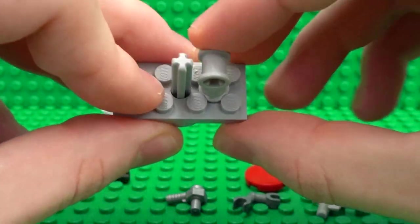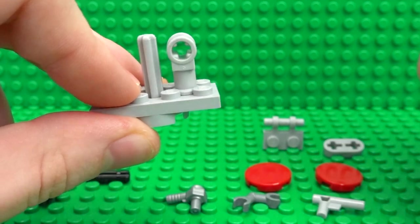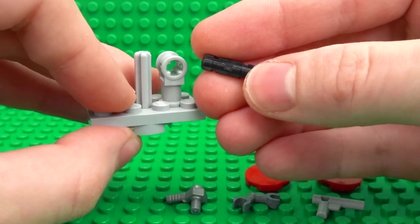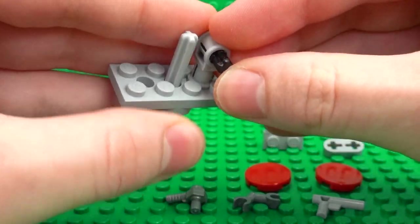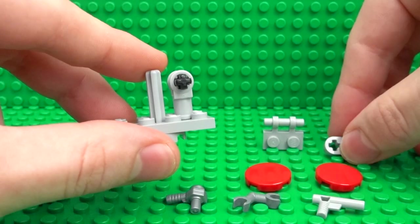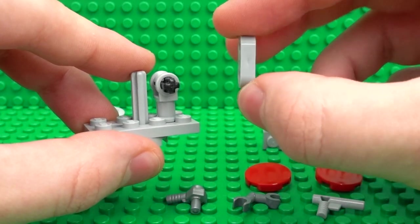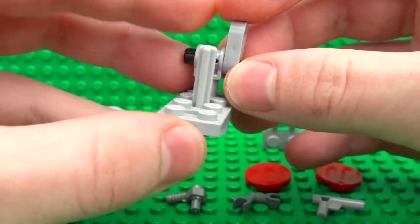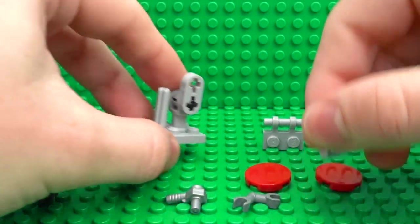And slide a 1x2 technic axle through the side of that piece. Then take this thin technic lift arm and attach it to one side of here.